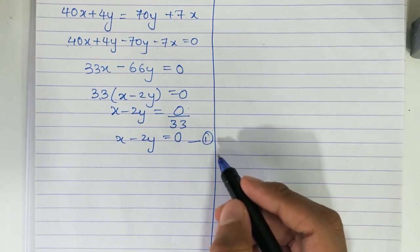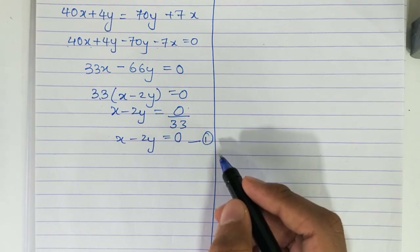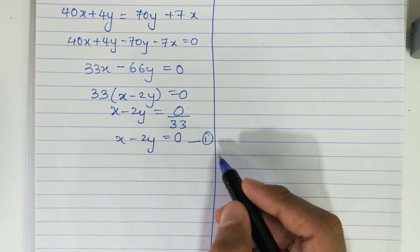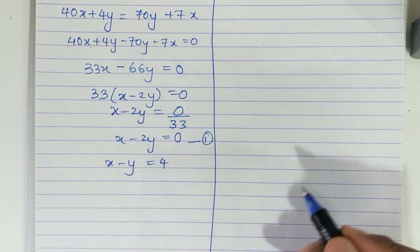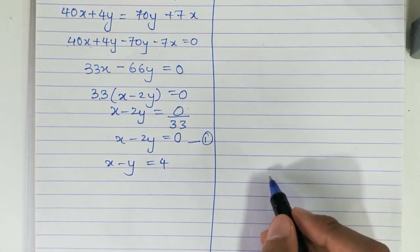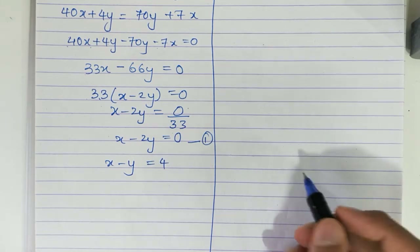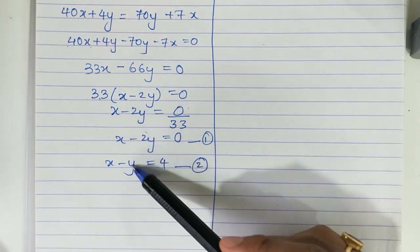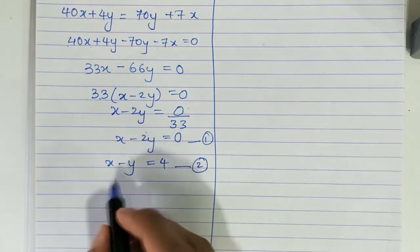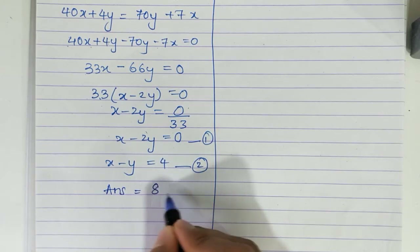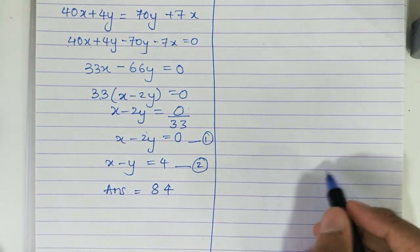The second equation says the difference between the digits is 4, so x minus y equals 4. Solve these two equations to get the answer. The answer is x=8 and y=4, so the number is 84.